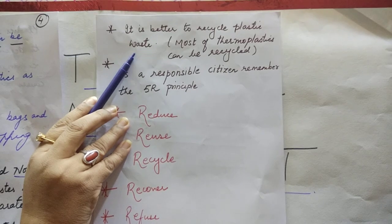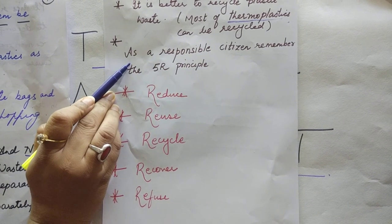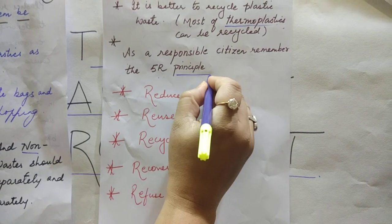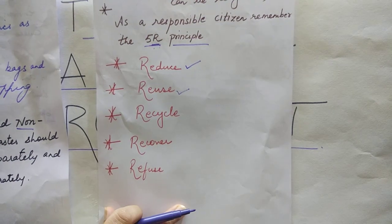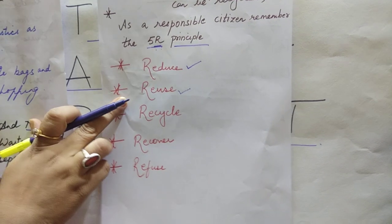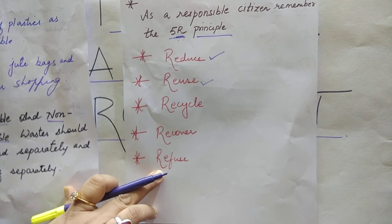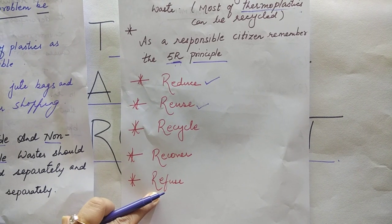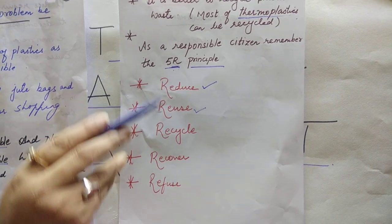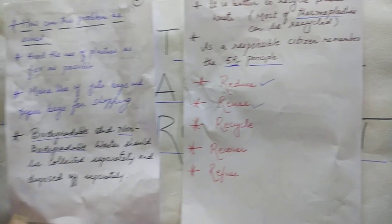It is better to recycle plastic waste wherever possible. Most recyclable plastics are thermoplastics. As a responsible citizen, always remember the five R principles: Reduce the waste, Reuse the waste, Recycle wherever possible, Recover new things from the waste, and Refuse — refuse to use plastic things again.